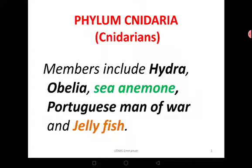Second to them is another phylum called Cnidaria. In some books they call it Phylum Coelenterata. The Phylum Cnidaria is named from the cnidocytes, the stinging cells that they have called cnidocytes. That's where the name Cnidaria comes from, because they possess the cnidocytes.